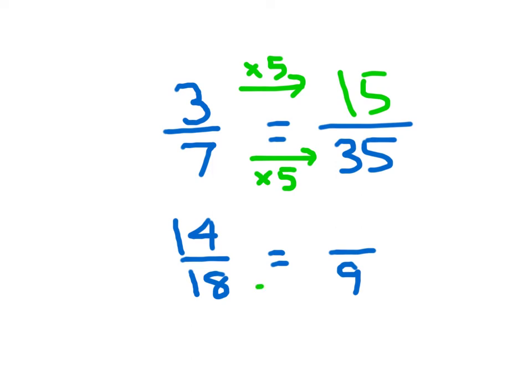For 14 eighteenths equaling how many ninths, 18 to 9, I would have had to divide by 2. 18 divided by 2 equals 9. So doing that same thing in the numerator, 14 divided by 2 is 7, so 14 eighteenths equals 7 ninths.